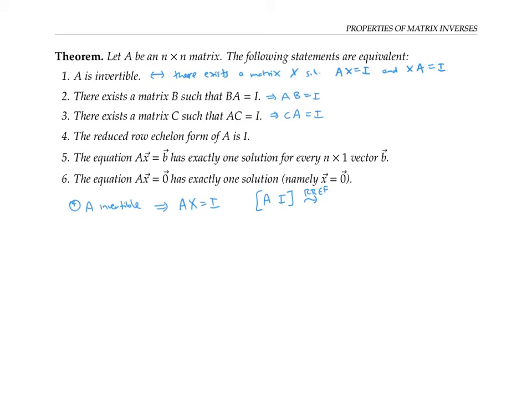When we do this, we're really just solving systems of linear equations, one system for each column of I. Well, since we know there's a solution, when we do the reduced row echelon form, we know we're going to have to get an I where A used to be, and then some other stuff where the I used to be.